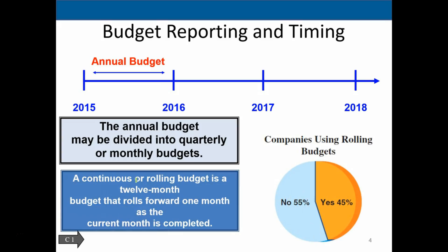Regarding budget reporting and timing: most people think of an annual budget broken down into quarterly budgets. If the year runs January through December, we break it into four quarters of three months each. Another convenient approach is a continuous or rolling budget — a 12-month budget that rolls forward one month as the current month is completed. As one month is done, we drop that month and project 12 months out again, so we're always looking 12 months into the future. There are benefits to both the rolling budget and the standard quarterly budget.